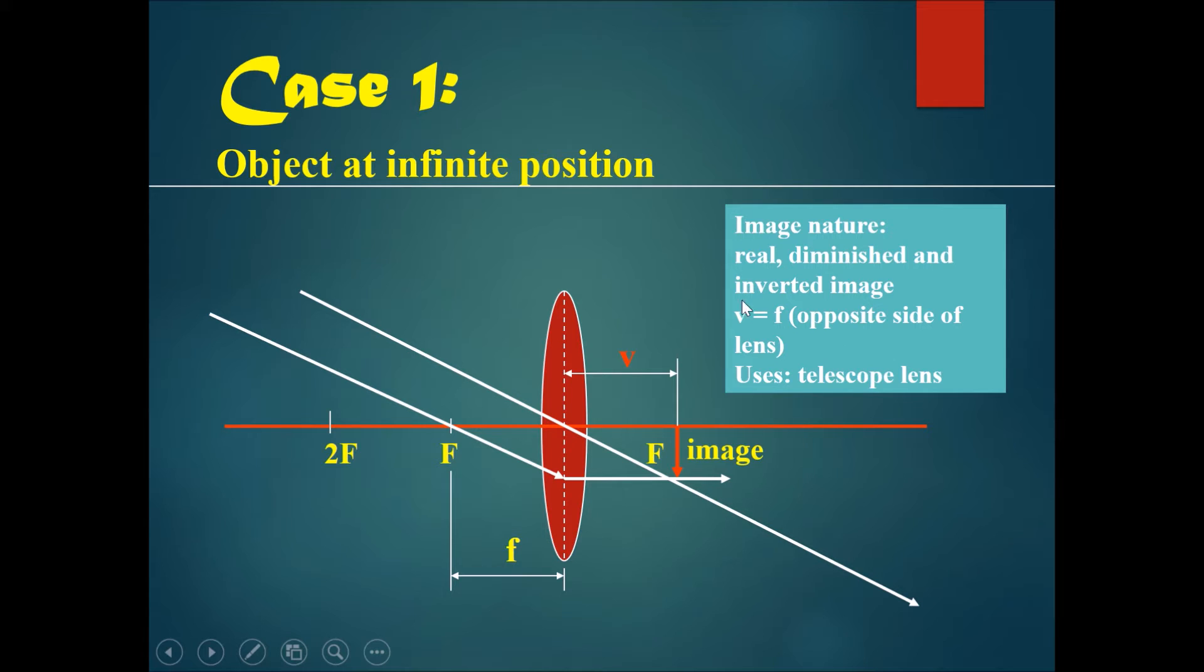The nature of this image is that it is real, which means it can be placed on a screen. It is diminished. An object that is very large, imagine a huge arrow.